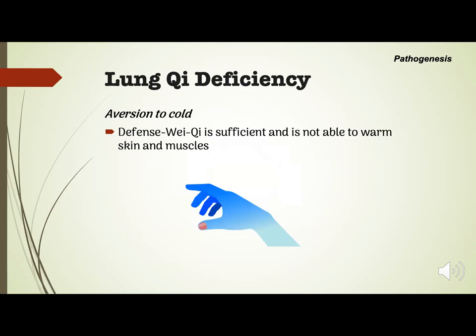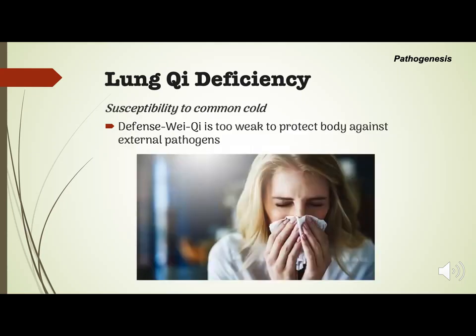In lung chi deficiency, the defensive wei chi is deficient and is not able to warm the skin and muscles, thus there is an aversion to cold. People with lung chi deficiency have a susceptibility to common cold, as defensive wei chi is too weak to protect the body against external pathogens.